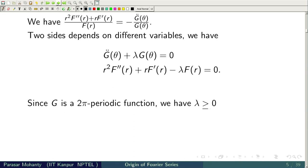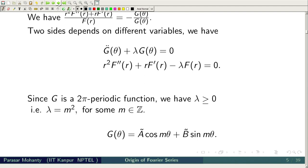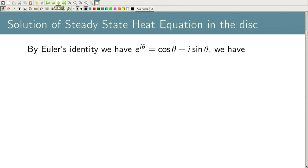If λ ≤ 0, we get only the trivial solution, so we assume λ > 0. For G to be 2π-periodic, λ must be an integer squared: λ = m² for some m ∈ ℤ. The solution is then G(θ) = ã cos(mθ) + b̃ sin(mθ), or equivalently using Euler's identity e^(iθ) = cos θ + i sin θ, we write G(θ) = a·e^(imθ) + b·e^(−imθ).